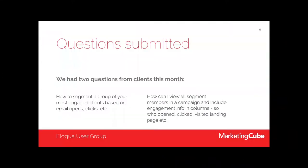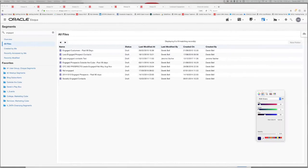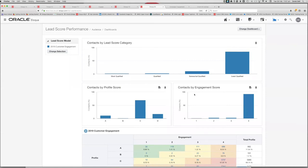Before jumping into the agenda topics, I wanted to respond to a couple of submitted questions. The first is: how do you segment a group of your most engaged clients based on email opens, clicks, etc.? The most obvious way is to build a lead score model — on screen now you can see a customer engagement model we've built, which focuses on customers rather than leads.